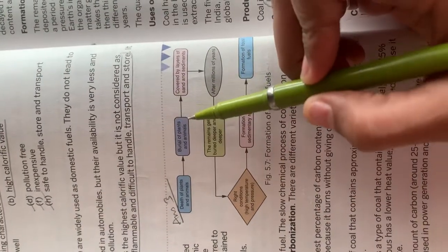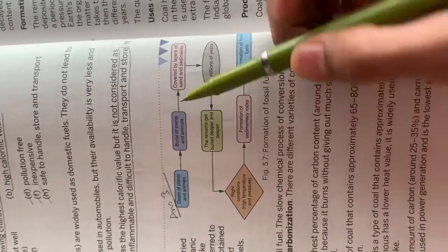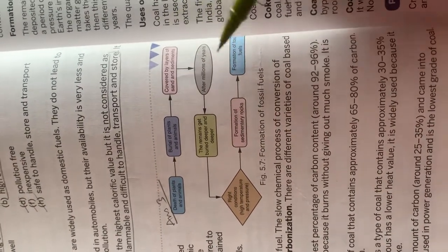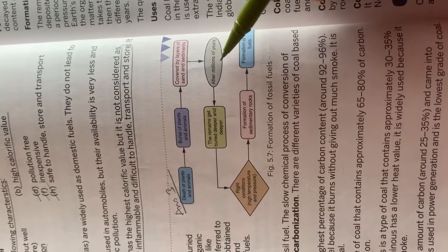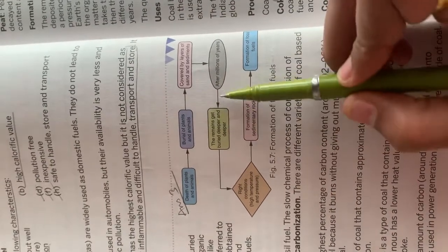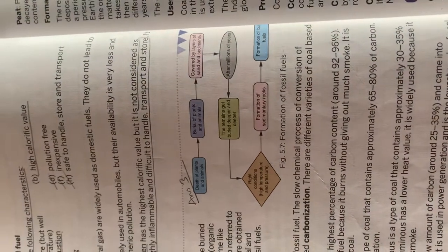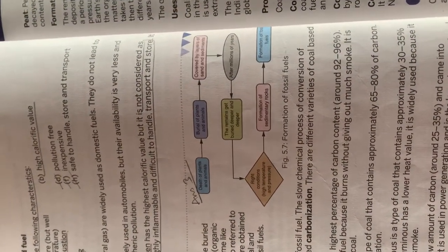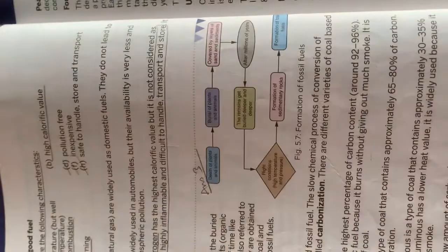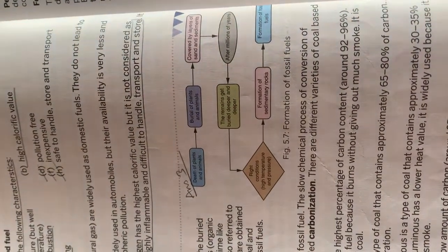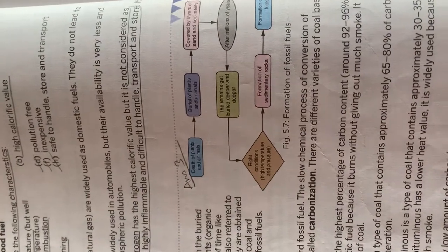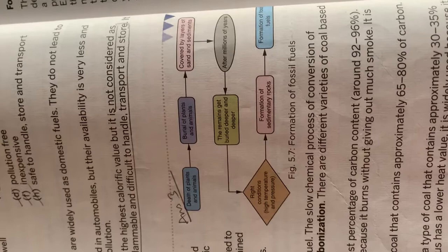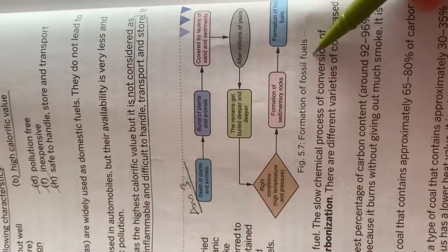Fossil fuels are formed when plants and animals die and are buried under layers of sand and sediments. After millions of years, the buried remains get deeper and deeper, and under conditions of high temperature and pressure, combined with the formation of sedimentary rocks, fossil fuels are formed.